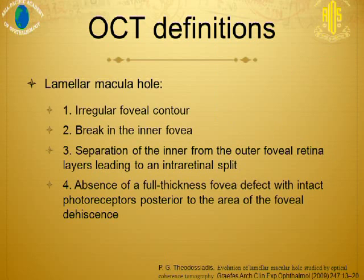The first evolution study of the lamellar hole by OCT was done by Witkin. He defined the OCT definition of a lamellar hole as having irregular foveal contour, a break in the inner foveal layer, and separation of the inner from the outer foveal retinal layers leading to an intra-retinal split, but with absence of a full thickness foveal defect and with intact photoreceptors posterior to the area of foveal dehiscence.